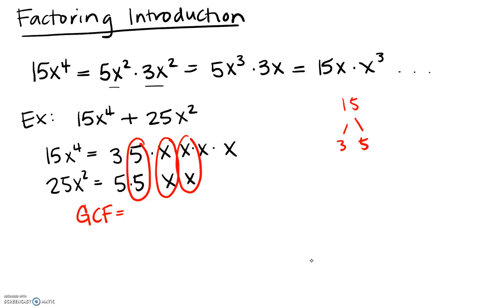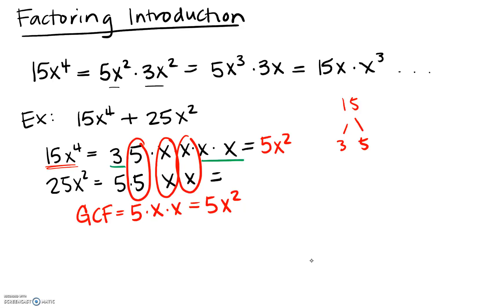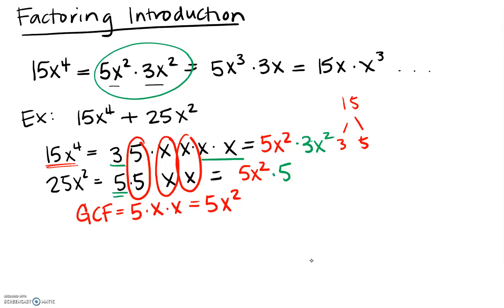The GCF of the two terms is 5 times x times x, or 5x squared. This tells us we can rewrite both terms using this GCF and whatever else is needed to recover the original. We can break up 15x to the fourth as 5x squared times 3x squared — the same factorization we played with earlier. The other term, 25x squared, can also be written with a factor of 5x squared, with the leftover piece being times 5.